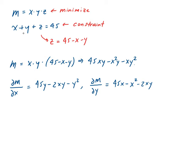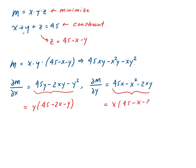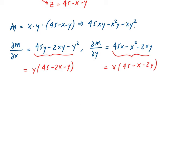Now we set these partials equal to zero and solve for x and y. Factoring the first partial, we get y times (45 minus 2x minus y) equals zero. Factoring the second, we get x times (45 minus x minus 2y) equals zero.